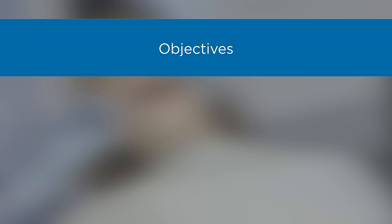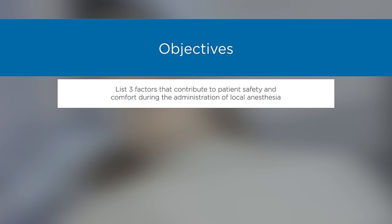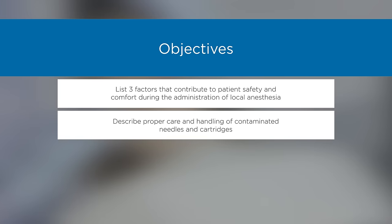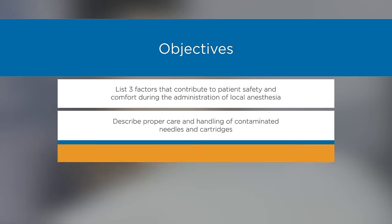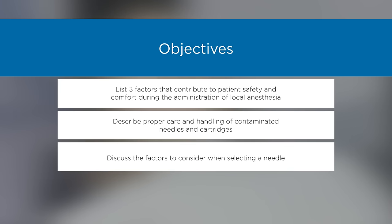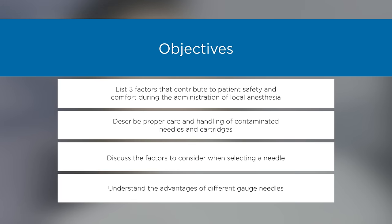Objectives: List three factors that contribute to patient safety and comfort during the administration of local anesthesia. Describe proper care and handling of contaminated needles and cartridges. Discuss the factors to consider when selecting a needle. Understand the advantages of different gauge needles.